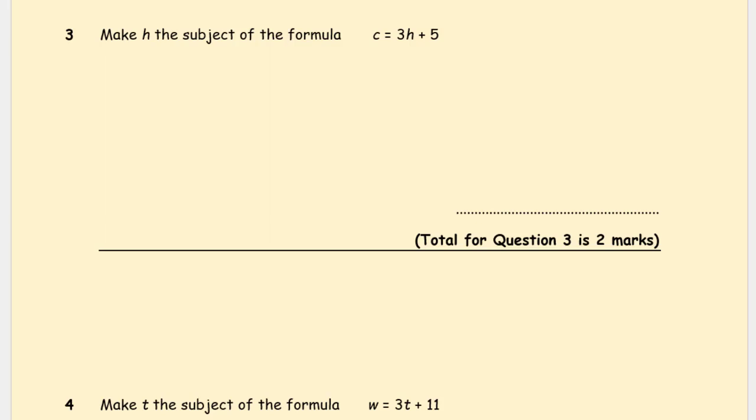Okay, I hope you had a go at it. Question 3: minus 5 to start off with. You're probably getting the hang of this already now. Then divide by 3 both sides. (c minus 5) over 3 is equal to h. So h equals (c minus 5) over 3, and it's worth two marks.